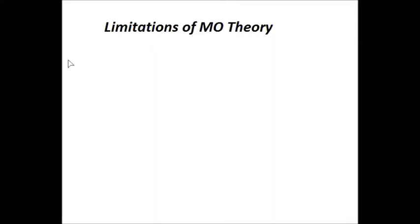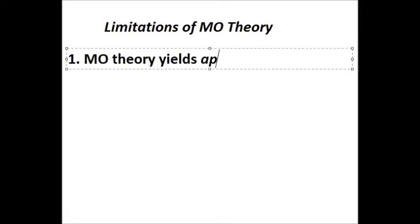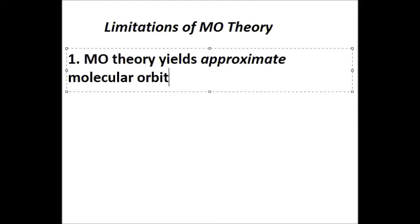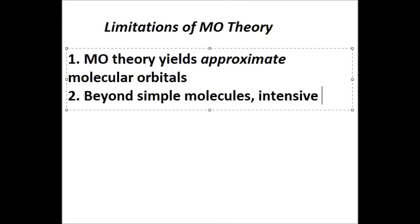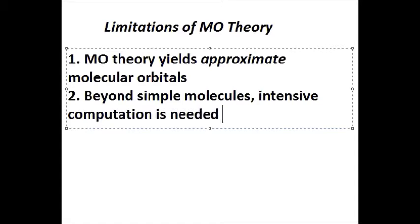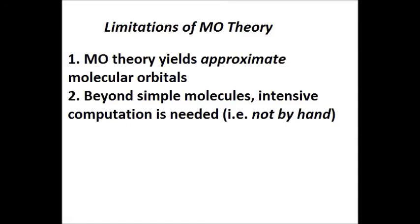So let's review. There are two primary limitations of MO theory. First, MO theory is nothing more than an approximate method to estimate what molecular orbitals look like — the molecular orbitals we calculate aren't quite reality. Second, it gets really difficult. Beyond simple molecules like hydrogen or nitrogen, you usually need to go to a computer. We have very good methods for doing this nowadays, but you can't do it by hand anymore. Those are the two main limitations of MO theory.